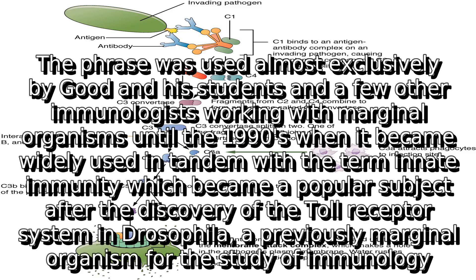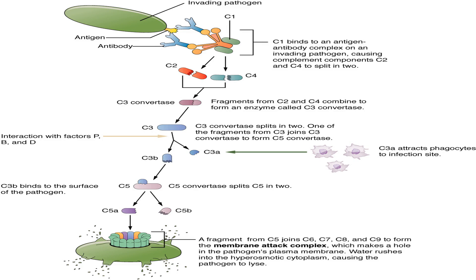The phrase was used almost exclusively by Goode and his students and a few other immunologists working with marginal organisms until the 1990s, when it became widely used in tandem with the term innate immunity, which became a popular subject after the discovery of the toll receptor system in Drosophila, a previously marginal organism for the study of immunology.